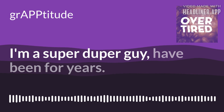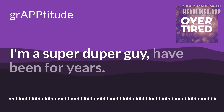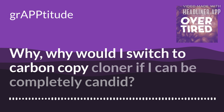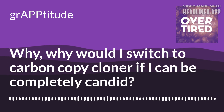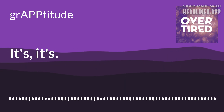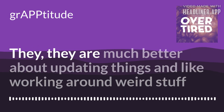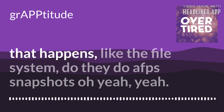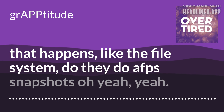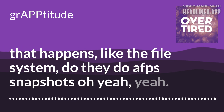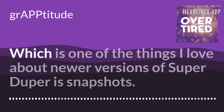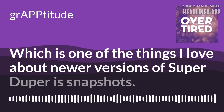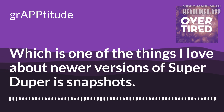I'm a Super Duper guy — have been for years. Why would I switch to Carbon Copy Cloner? If I can be completely candid, it's because it's more updated. They are much better about updating things and working around weird stuff that happens, like the file system. Do they do APFS snapshots? Oh yeah. Which is one of the things I love about newer versions of Super Duper — snapshots.